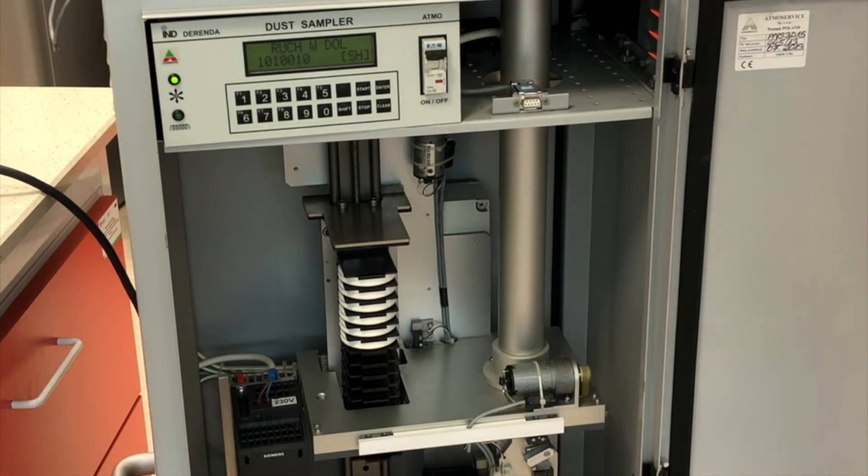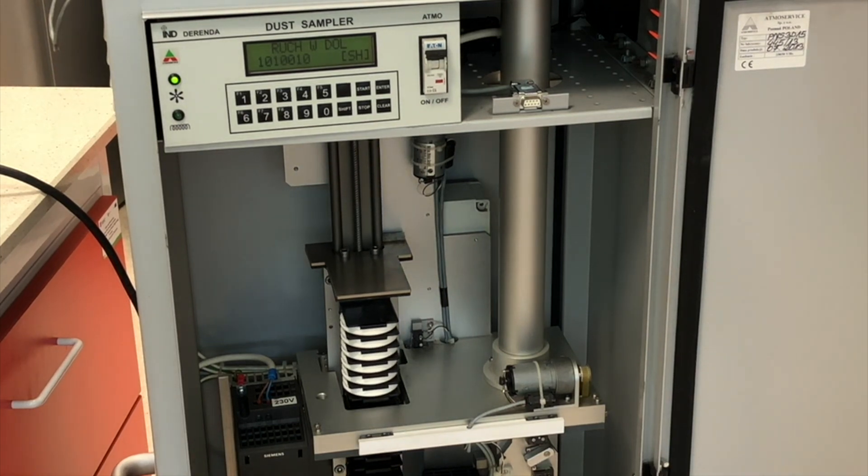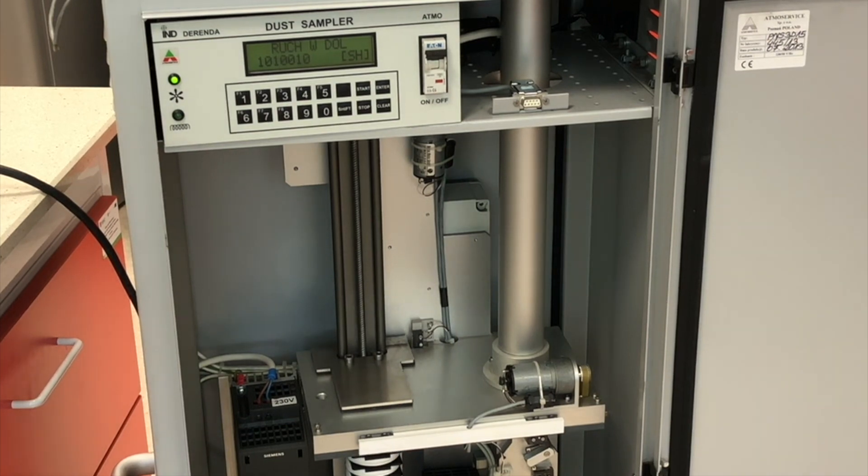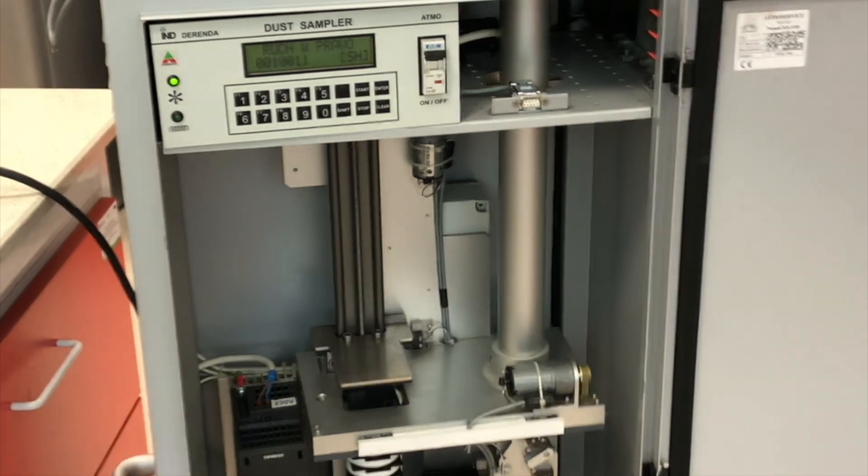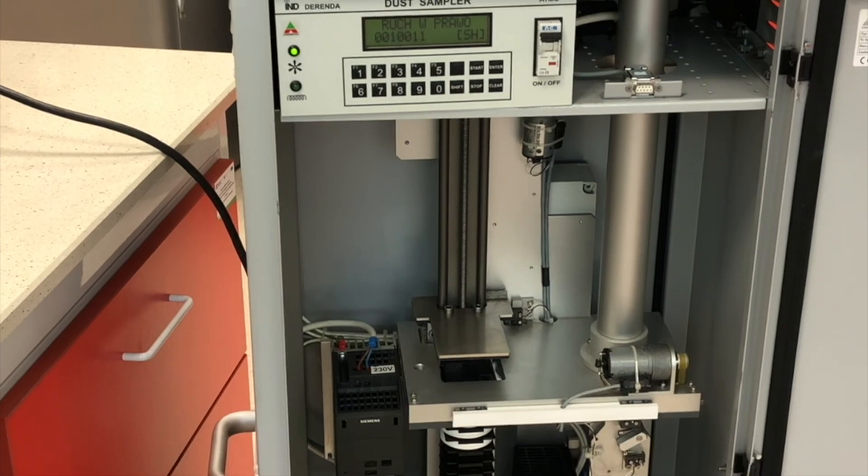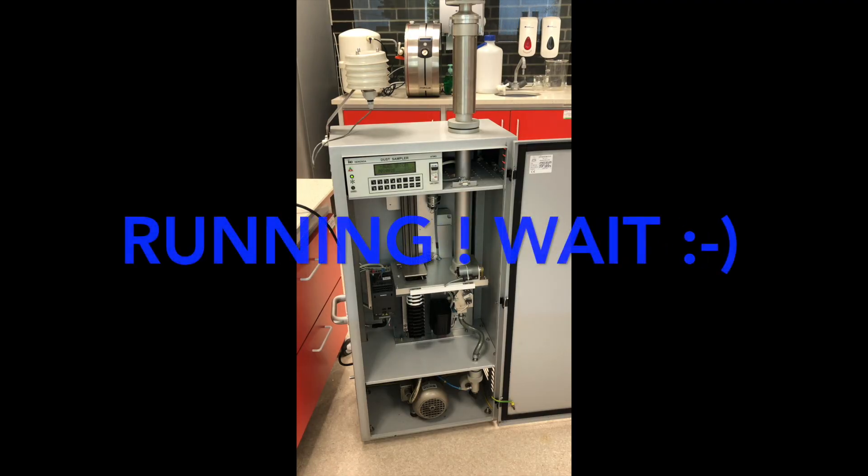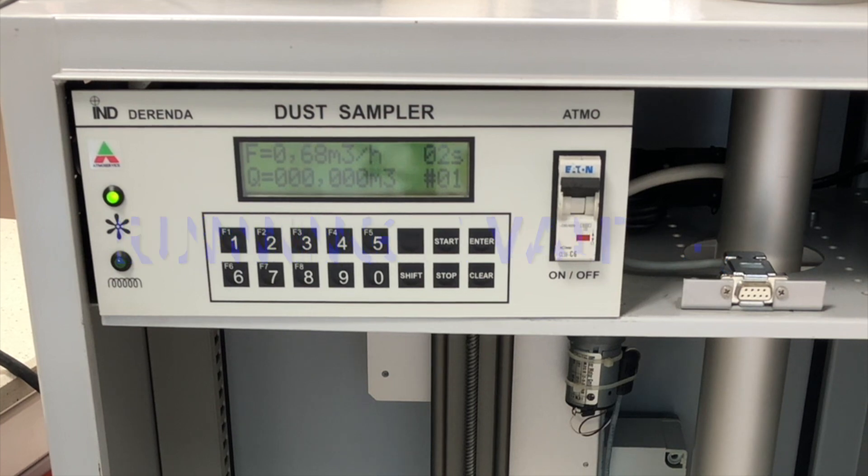Now the cassette goes down and the sampler takes the filter. And it will start to work. The important thing in the sampler is the flow. It has to rise to 2.3 cubic meter per hour.